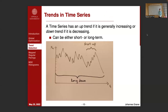Moving on to the next problem: trend detection in time series. Generally, we say that a time series has an upwards going trend if it is generally increasing over some time period, and a downward trend if it is decreasing. These trends can be either short or long term. In the example here, toward the end of the time series we see a short term upwards trend, but over the whole time span we have a slight downward trend that is much more long term.